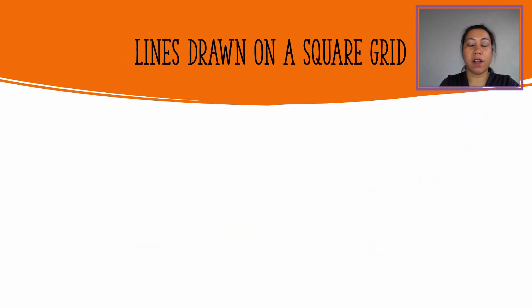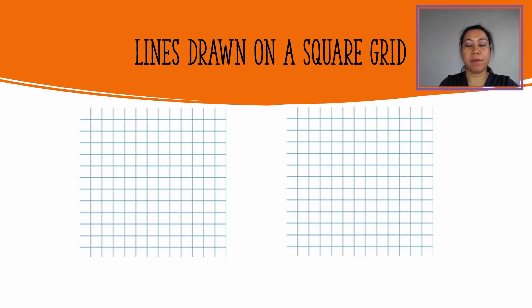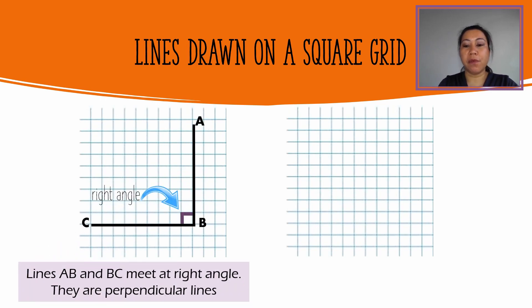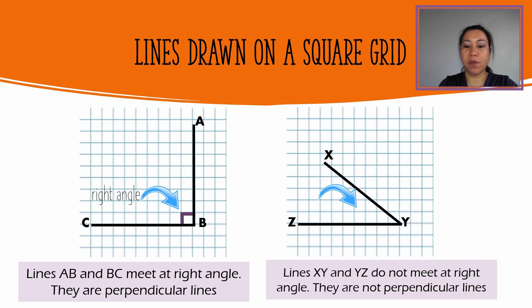Let's try to draw lines on the square grid like this. Lines AB and BC meet at the right angle. They are perpendicular lines. On the other hand, lines XY and YZ do not meet on the right angle. They are not perpendicular lines.